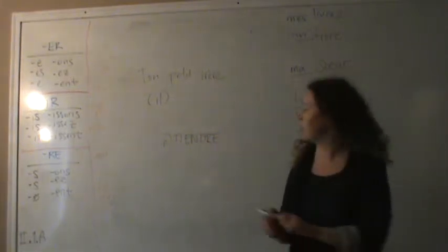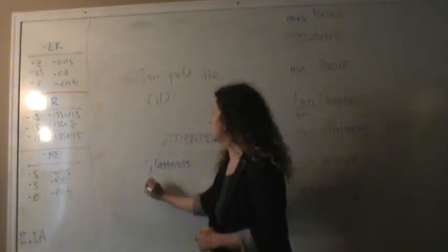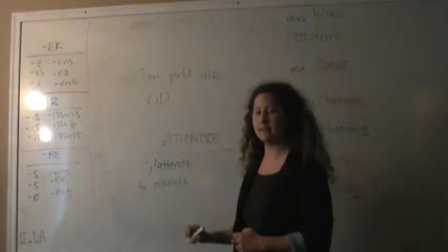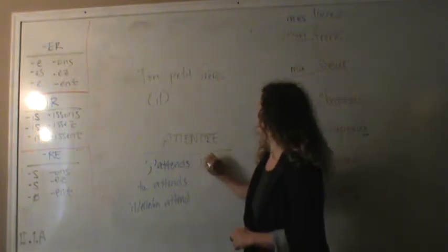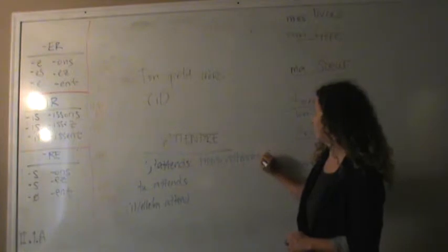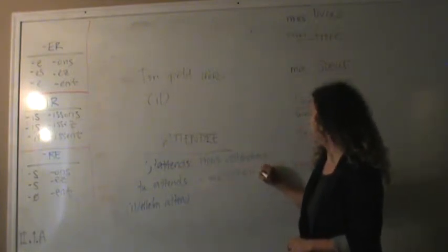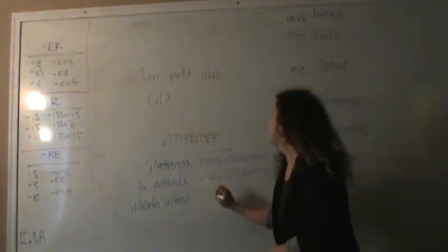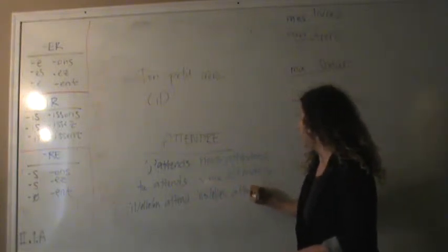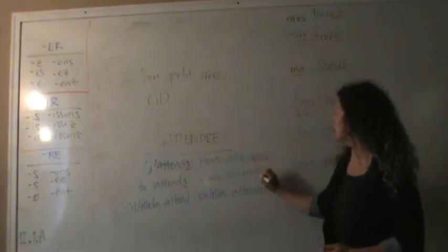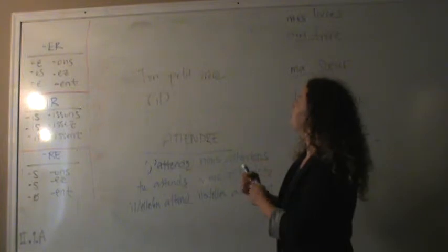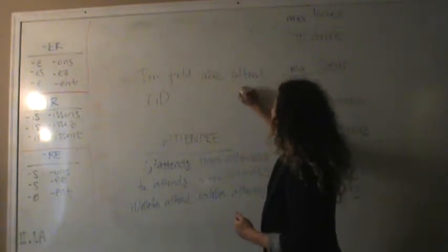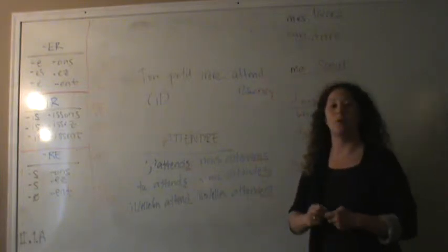When I conjugate attendre, attendre means to wait for. The for is already included in it. So it would be j'attends with an S, tu attends with an S, il, elle, or en, attendre. And what's my ending? There isn't one. Nous attendons. Vous attendez. And then il and elle attendre with an E-N-T. And those are my endings right there. S, S, nothing. O, N, S, easy, E-N-T. Since my little brother is going to act like he, I would use A-T-T-E-N-D. Ton petit frère, il attendre Barney. Your little brother, he waits for Barney.